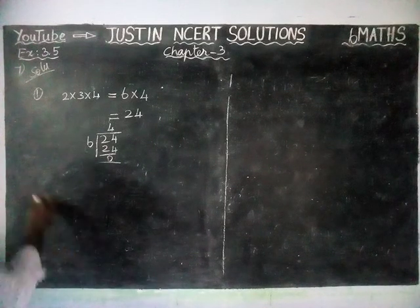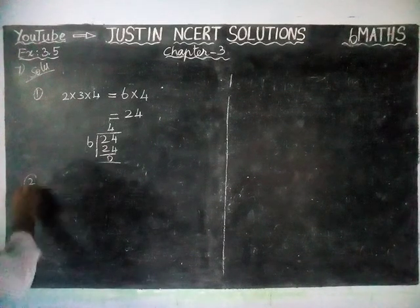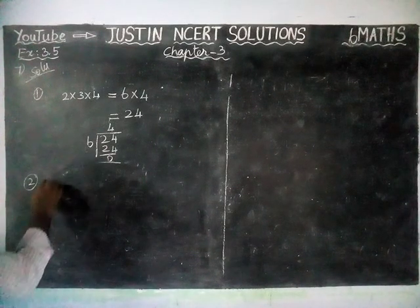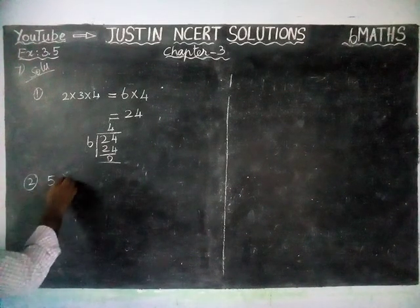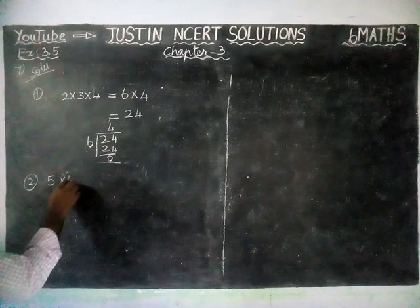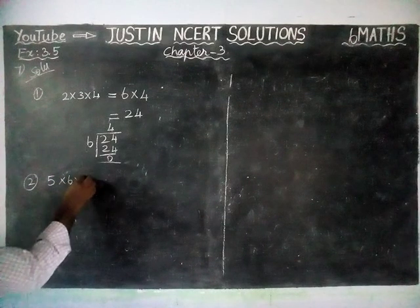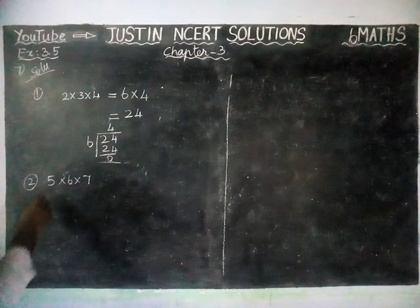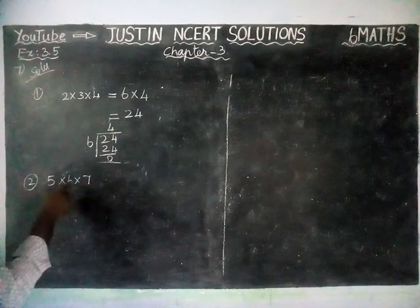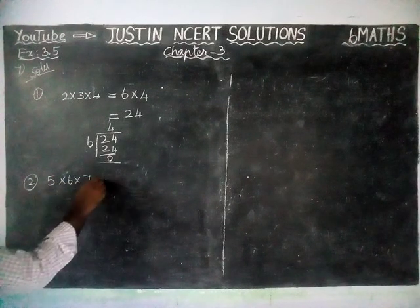Next, we are going to check the second example. We are going to take numbers 5, 6, 7 — 3 consecutive numbers.